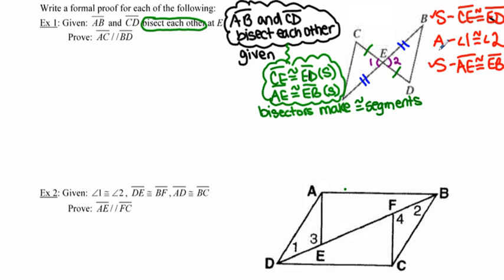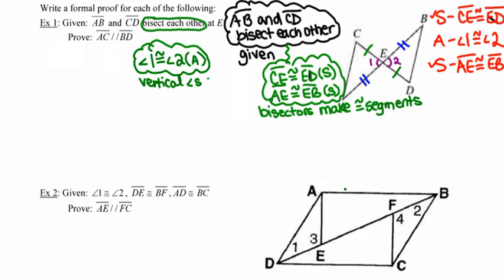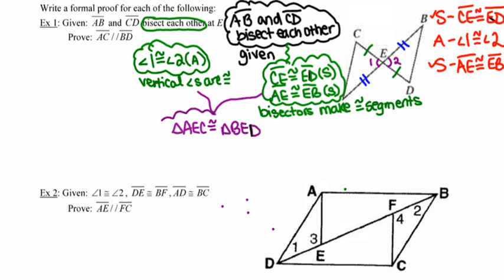I've addressed the two pairs of sides; now I've got to address the congruent angles. Those angles are congruent to each other because they're vertical angles. At this point I have enough to conclude that the triangles are congruent. Make sure when you name the triangles that you name them correctly — I'll call the first one AEC, carefully matching up corresponding parts: B corresponds with A, D corresponds with C. My reason for making those congruent is side-angle-side.